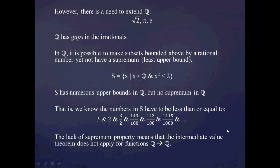It turns out that this lack of the supremum property for the rational numbers puts you in a really awkward position for doing calculus or continuous analysis, because it prevents you from proving theorems like the intermediate value theorem. And you need that theorem to prove things like the mean value theorem, and also to prove that functions take on max or min values on an interval. So this is a motivation for extending the rational numbers to the real numbers.